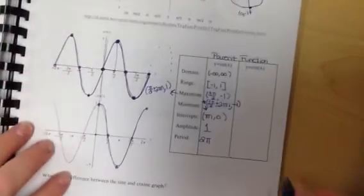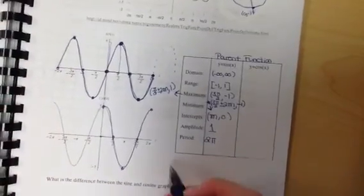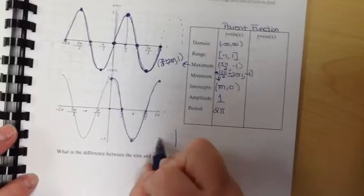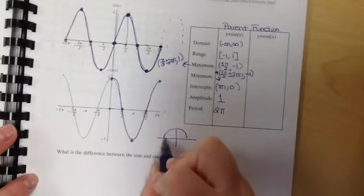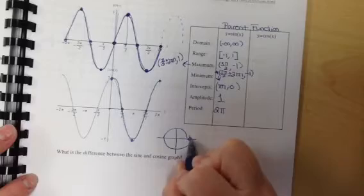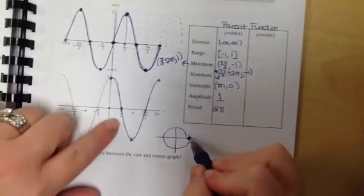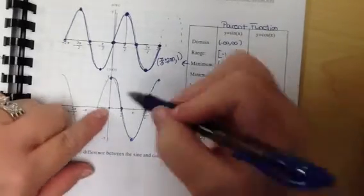Now if we do the same thing for cosine, I'm going to draw another circle down here so you can see it. Here's my circle. When we start right here, cosine is x and it's at one, so it's (0,1).